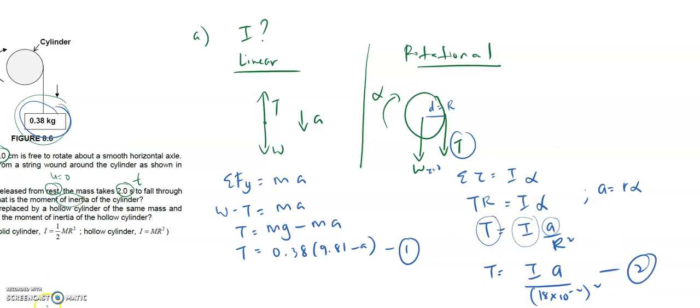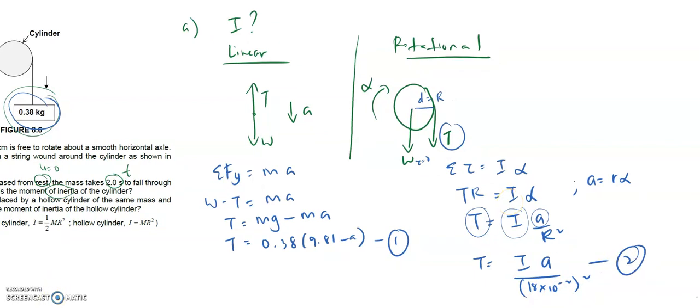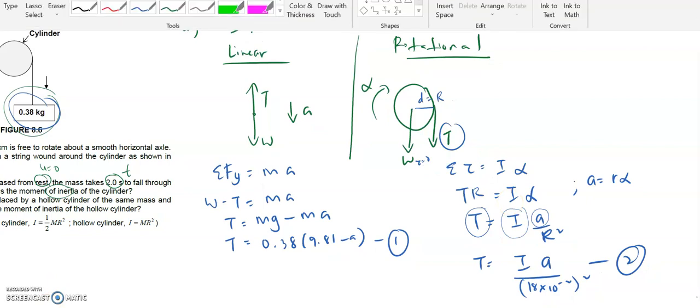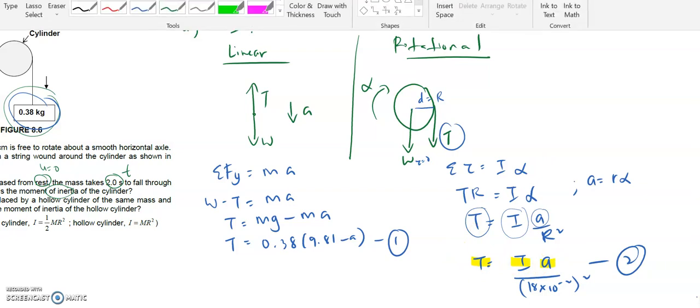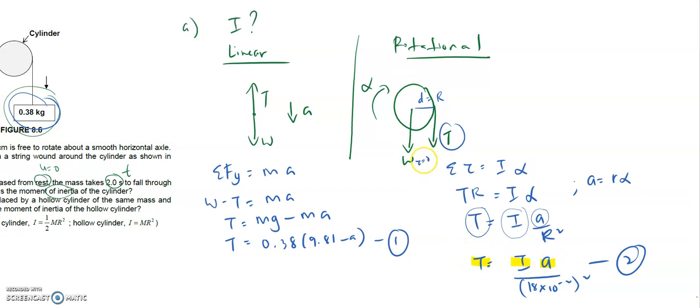T equals I unknown, a also unknown, r we all know. What is our r today? R is 18 cm, so 18 times 10^-2 squared. Leave it as my second equation.